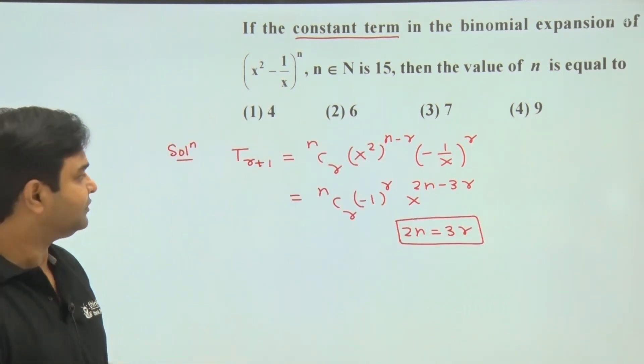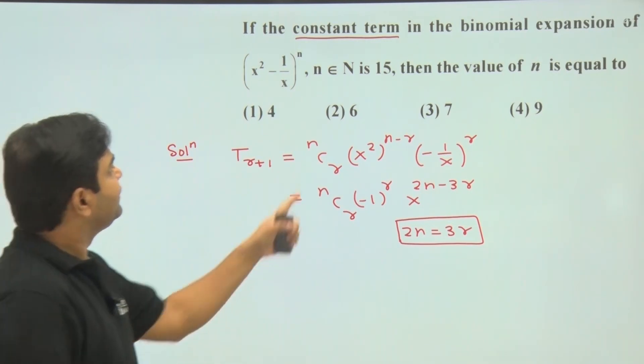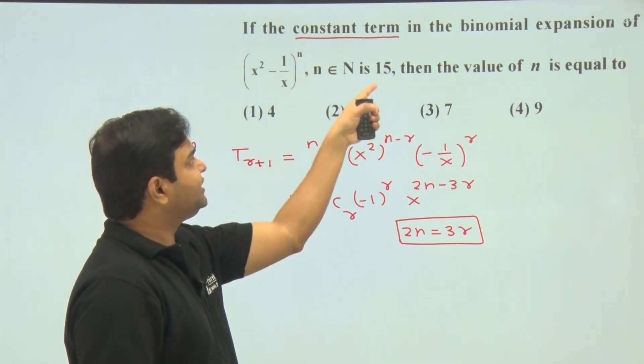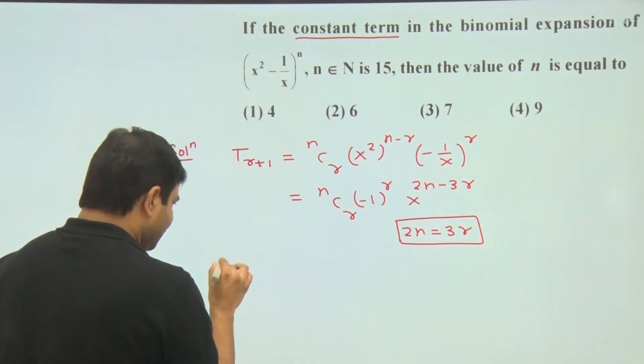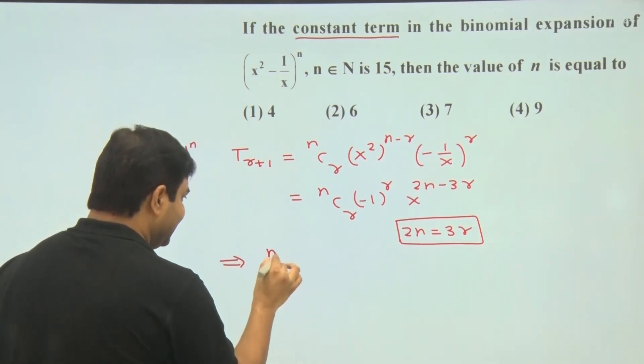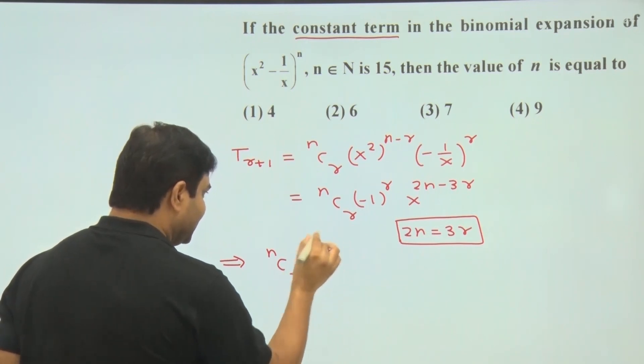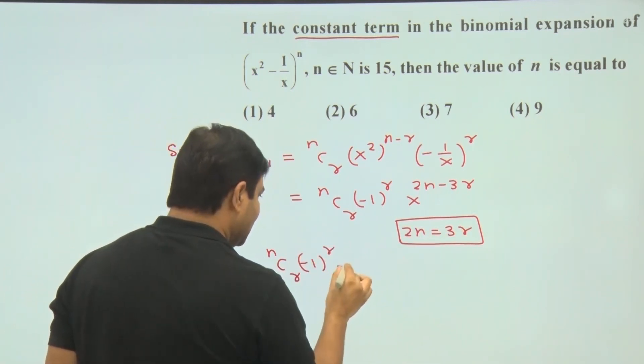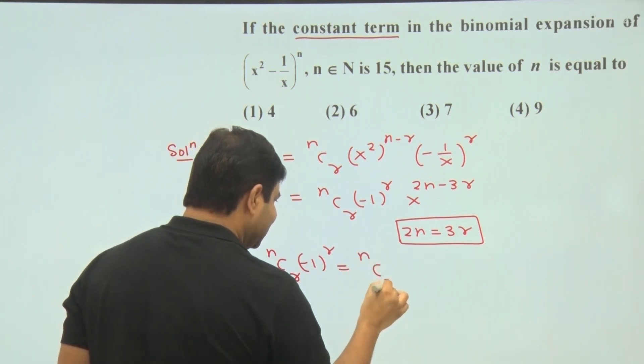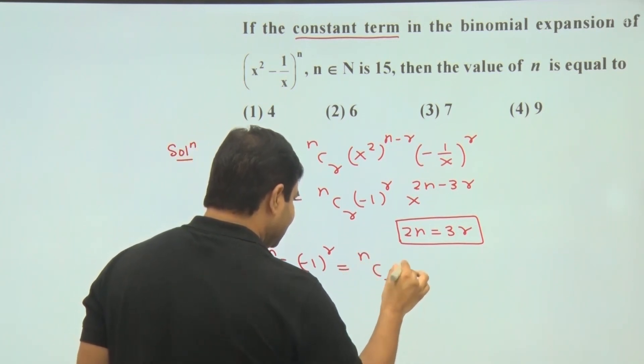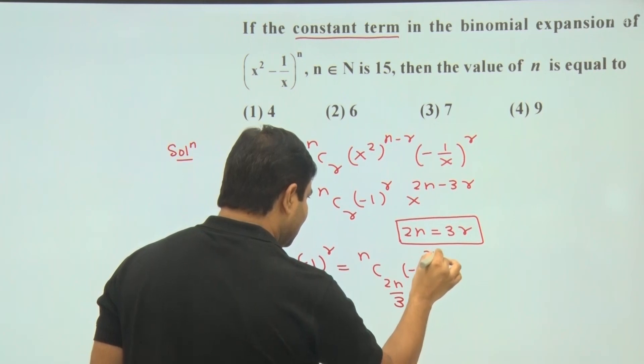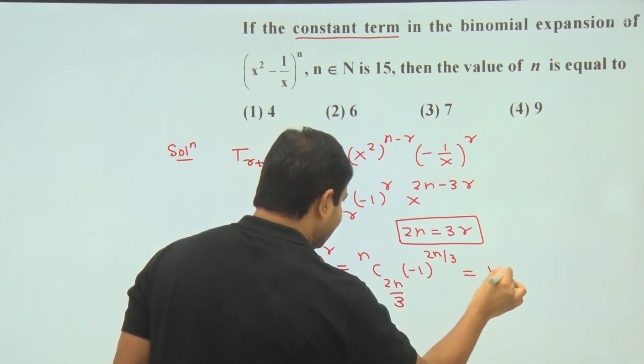So from here we are getting constant term: nCr, minus 1 power r. And if r is equal to 2n by 3, so we can write nC(2n/3), then minus 1 power 2n by 3, and this will be 15.